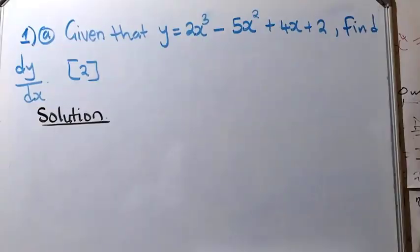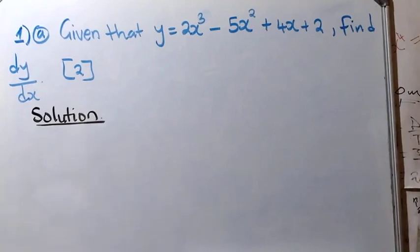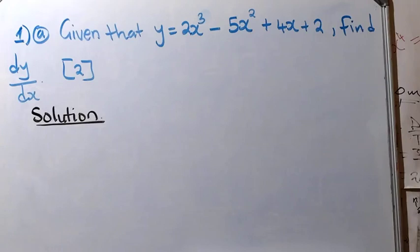Good day viewers, hope you're doing well. So let's see how best we can answer this question on the board. Question 1A: given that y is equal to 2x cubed minus 5x squared plus 4x plus 2, find dy/dx.